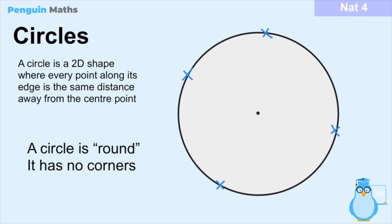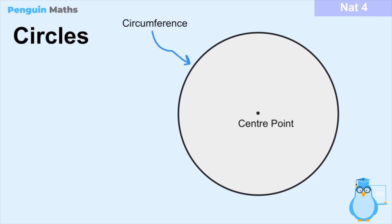It's also fairly obvious to describe a circle as being round, but what that means in terms of maths and geometry is the fact that it has no corners. Unlike a triangle which has three corners or a square which has four corners, a circle has no corners and that's what makes it a unique shape. In previous lessons we've described shapes such as squares and triangles by their angles and side lengths, but in circles we don't have those things so we have to use different ways of measuring and quantifying the circle.